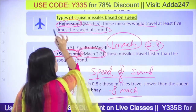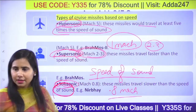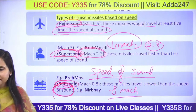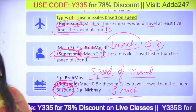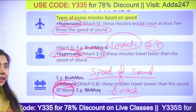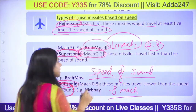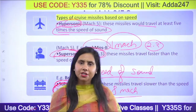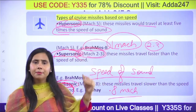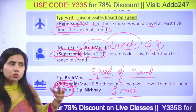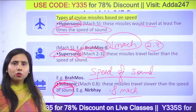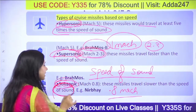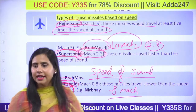Hypersonic will travel at least five times the speed of sound, that is Mach 5. India has hypersonic capability — BrahMos 2, which was jointly developed with Russia, is India's hypersonic missile. For supersonic, BrahMos missile is India and Russia's joint venture. For subsonic, the example is India's Nirbhay missile.